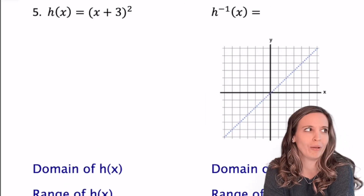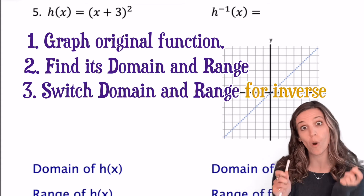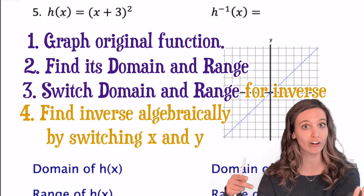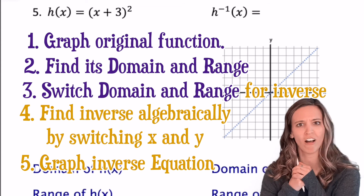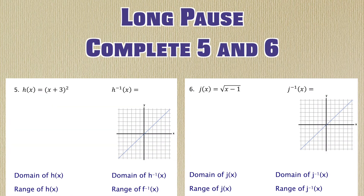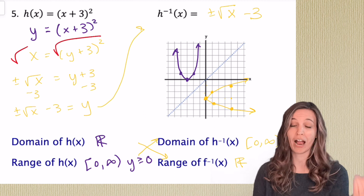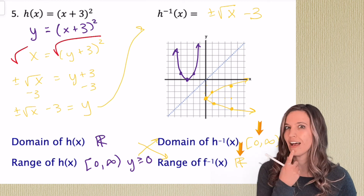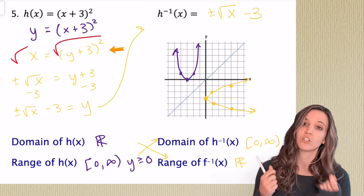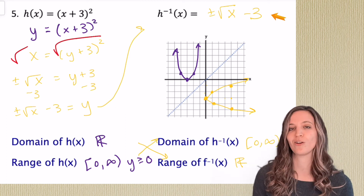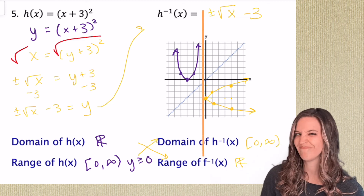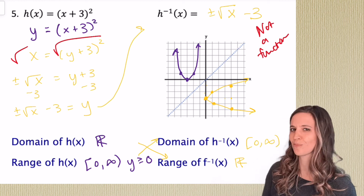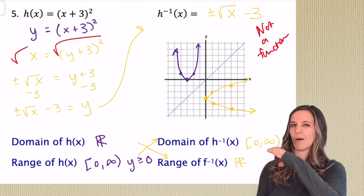Basically: graph the original function, find its domain and range, swap those so that we have the inverse's domain and range, find the inverse function, and then graph it. Try that on five and six. For number five, we graph our parabola x plus three squared and find the domain and range, switch those to get the inverse's domain and range. Then to find the inverse algebraically, we switch x and y, solve for y, and get plus or minus square root of x minus three. Is that inverse a function? No — doesn't pass the vertical line test. So when we start as a parabola, the inverse is not a function.